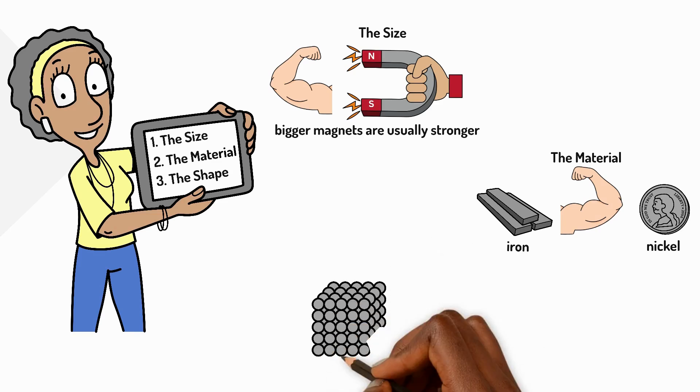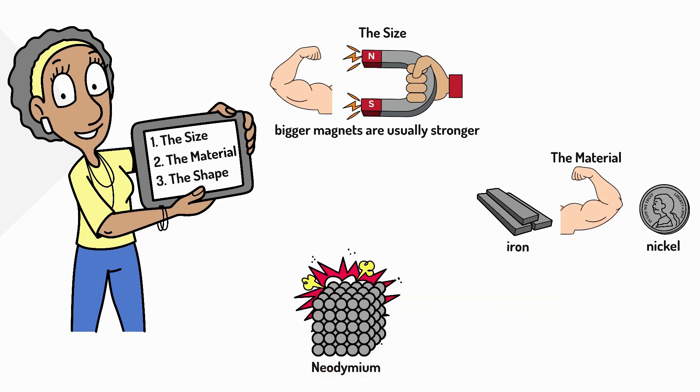The strongest everyday magnets are made from neodymium, which is a special type of metal that makes an incredibly powerful magnet.